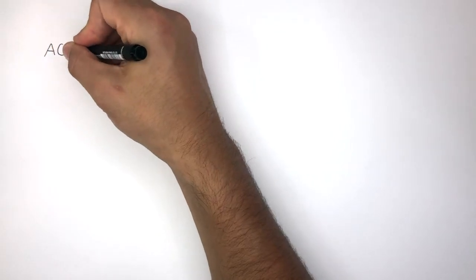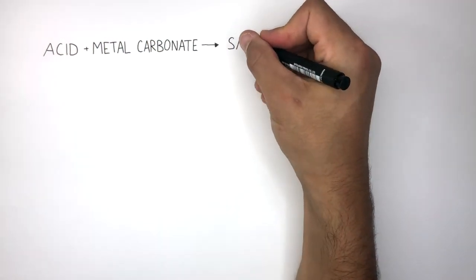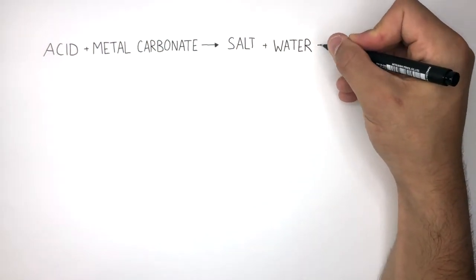The word equation for when an acid reacts with a metal carbonate is: acid plus metal carbonate reacts to form a salt, water, and carbon dioxide.